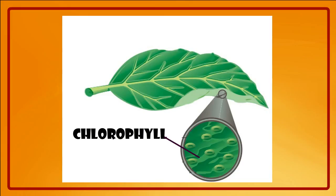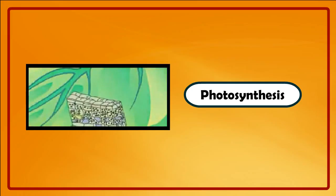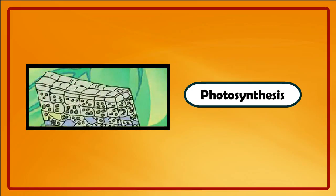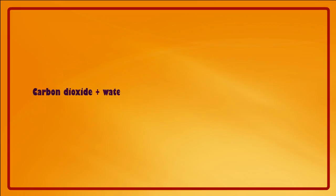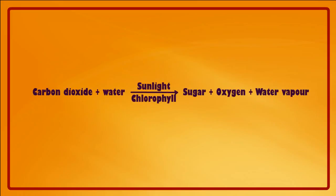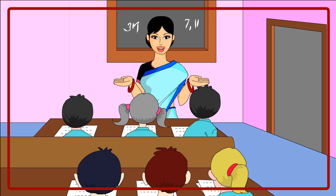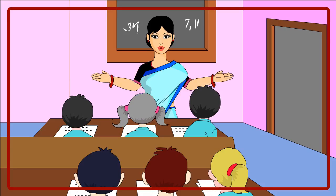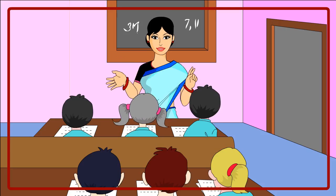Leaves are also called the food factories of the plant. Leaves contain a green-coloured pigment called chlorophyll that traps the energy of the sun. The products of photosynthesis are sugar, oxygen and water vapour. The oxygen released during photosynthesis is used by humans for breathing.